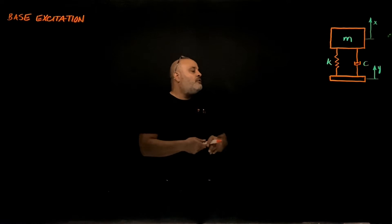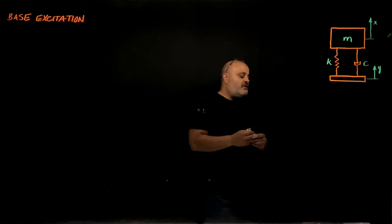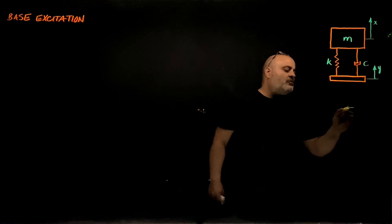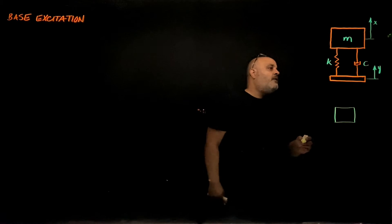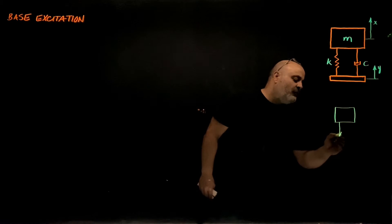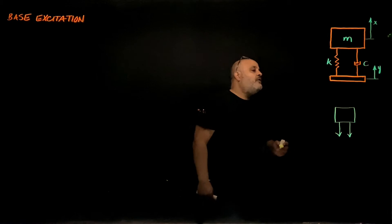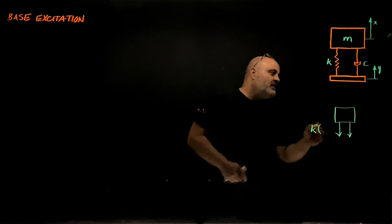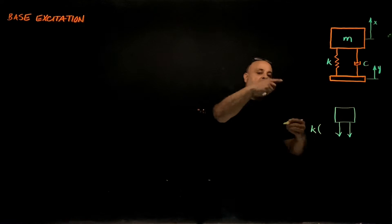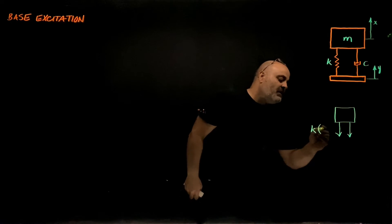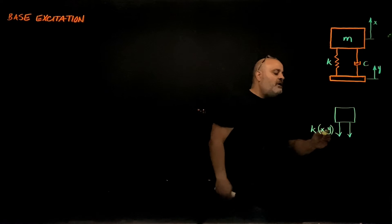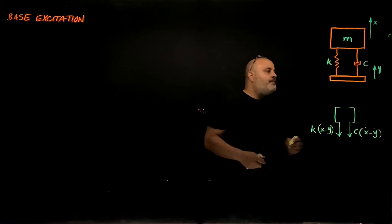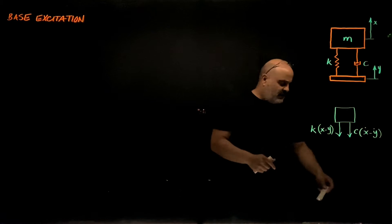I will derive the equation of motion of this system using the Newtonian approach, which is very straightforward. We have the spring force and the damping force. The spring force is k times the difference between x and y — that's the extension of the spring — so it's k(x − y), and therefore the damping force is c times (x-dot minus y-dot). Those are the only two forces on the mass.